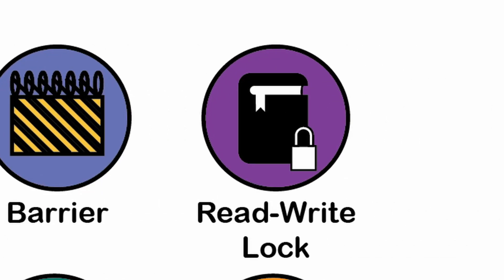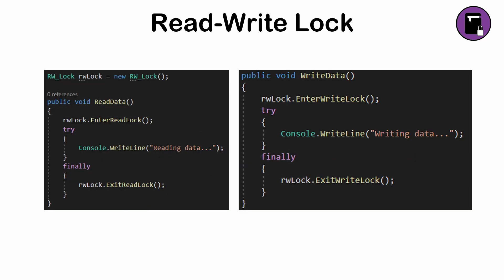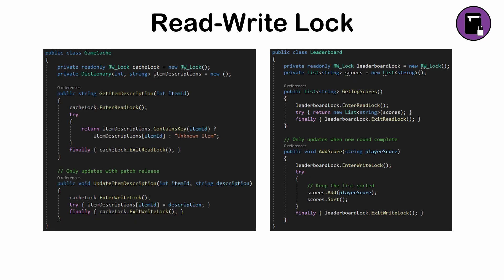The read-write-lock pattern — a way to build on basic locking concepts. It allows multiple threads to read a resource simultaneously, but ensures only one can write to it at a time. This pattern is great for scenarios with lots of reading and occasional writing, like caching systems.